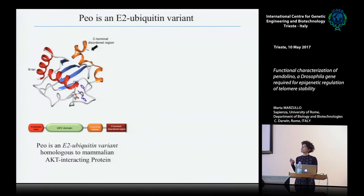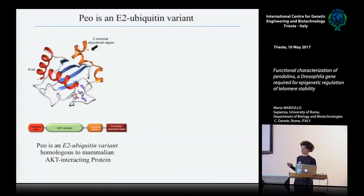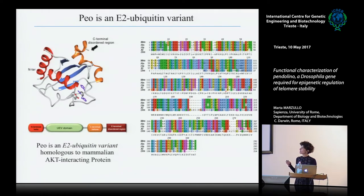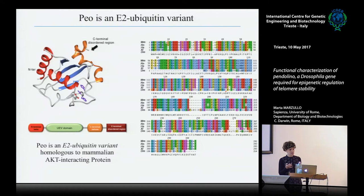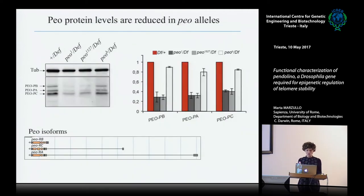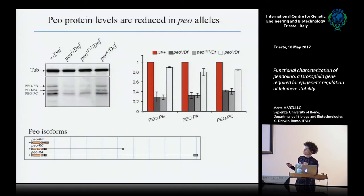Pendolino is an H2B ubiquitin ligase protein. Here is the tridimensional model of the protein and the schematization of its different domains. It is strongly conserved across different species and has a mammalian homologue, the protein AKTIP, which has also been demonstrated to be involved in telomere stability. The molecular characterization of the different mutant alleles reveals a reduction of the three Peo protein isoforms — a reduction that is stronger in the strong allele and lower in the hypomorphic allele, as shown in the western blot and the histogram quantification.